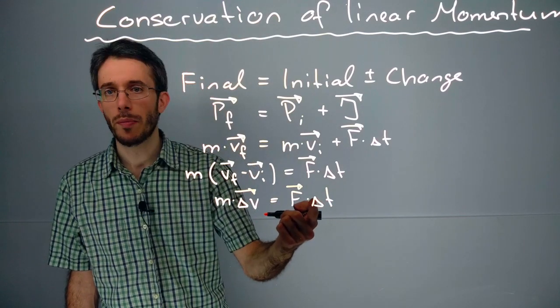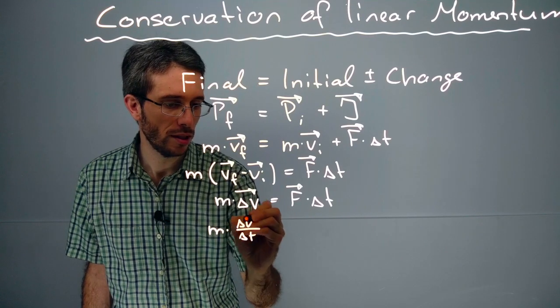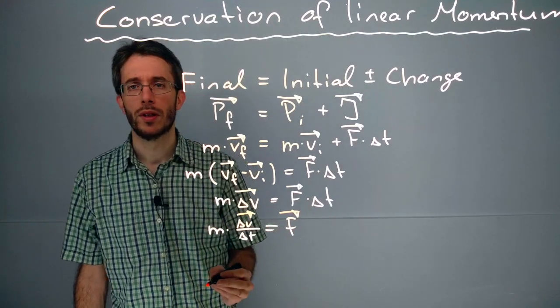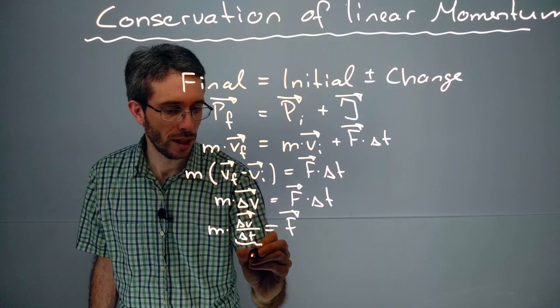And now let me just divide by the time. So I have mass times delta v over delta t is force. Now what is change of velocity over time? That is acceleration.